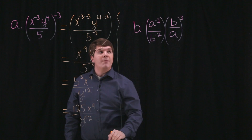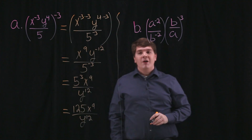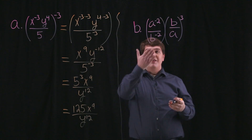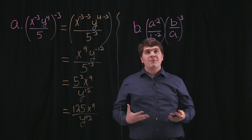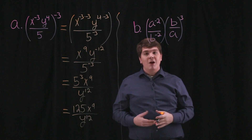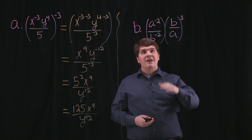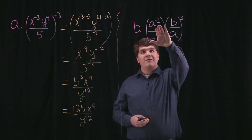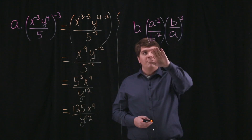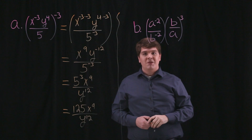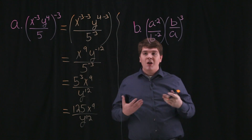For part b, we're asked to rewrite this expression using only positive exponents. Just by looking at it, the only two negative exponents we have are this a to the negative 2 and this b to the negative 2.